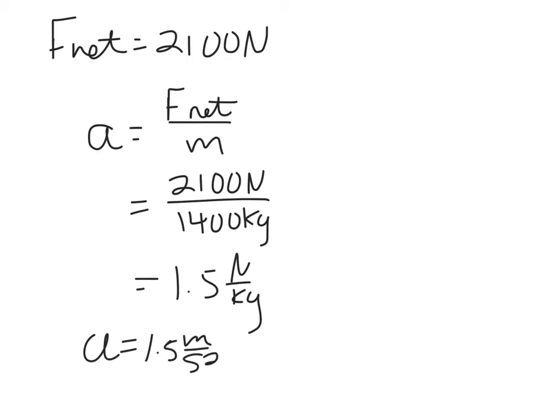So now we know the acceleration. We were given delta x and we were given the initial velocity. We have three kinematic equations to choose from. And just a reminder in case you forgot. First one is delta x equals one half a t squared plus v initial t.